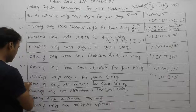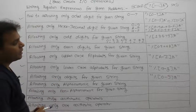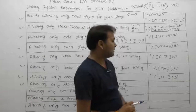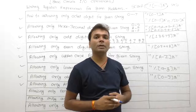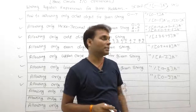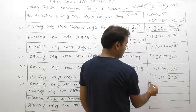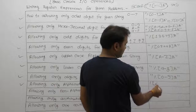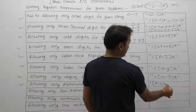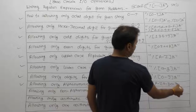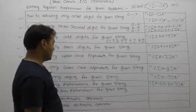Next, allowing only alphanumeric characters for a given string. Alphanumeric means a combination of alphabets — both lowercase and uppercase — as well as digits. The regular expression is: percent, square bracket, A to Z, a to z, 0 to 9, closing square bracket, 's'. This reads only alphanumeric characters — alphabets plus numeric digits.